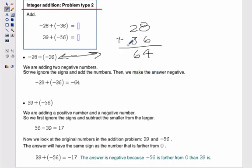But they're both negative, so our answer has to be negative. Since both signs are negative, our answer must be negative. Negative 64.